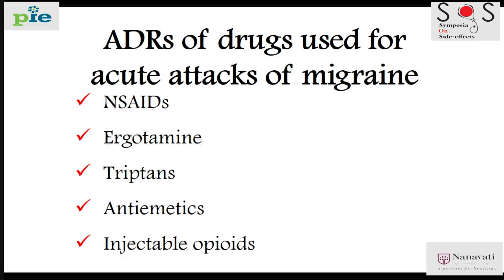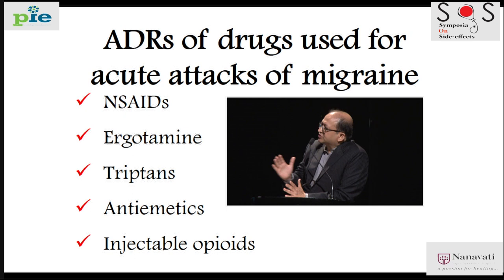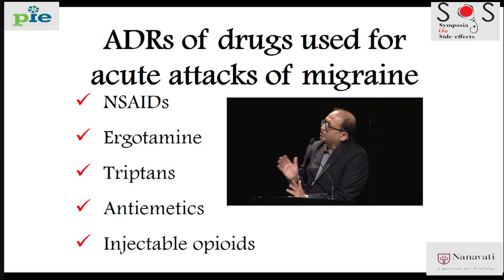One common neurological problem we see is migraine. There are two types of drugs used in migraine: drugs for acute attacks and drugs for preventing recurrent attacks, or prophylaxis. Focusing on adverse drug reactions, what is your usual first choice for acute migraine pain relief?